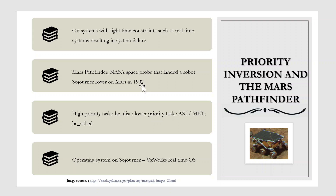Each reset re-initialized all hardware and software, including communications. If the problem had not been solved, the Sojourner would have failed in its mission. The problem was caused by the fact that one high priority process, BC-DIST, was taking longer than expected to complete its work. This task was being forced to wait for a shared resource held by a lower priority ASI-MET task, which in turn was preempted by multiple medium priority tasks. The BC-DIST task would stall waiting for the shared resource, and ultimately the BC-Shared task would discover the problem and perform a reset. The Sojourner was suffering from a typical case of priority inversion.